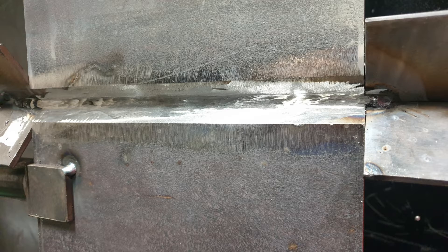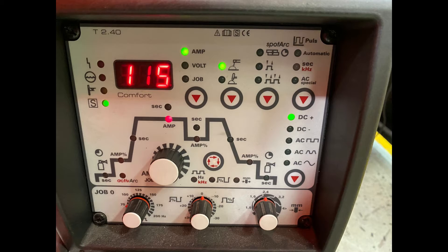Moving on to the hot pass. Because of the width, we're going to split this into two runs so that we're controlling the heat, so we're not over-penetrating or overheating that root run.